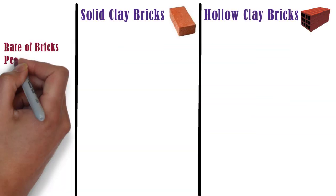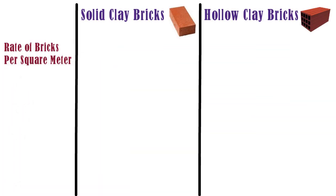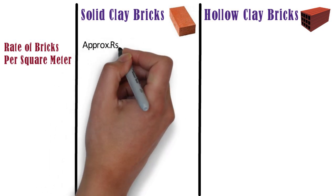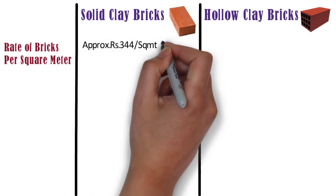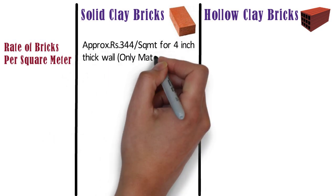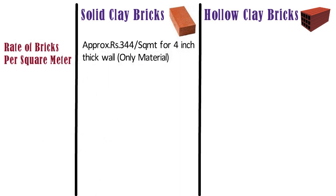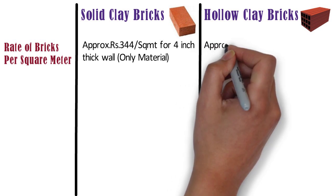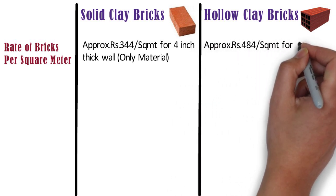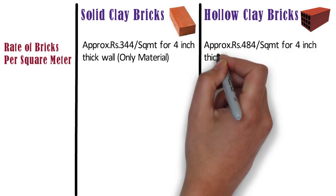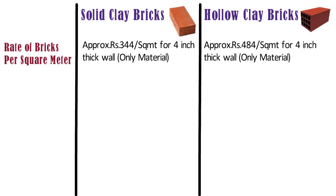Rate of bricks per m². In case of solid clay bricks, the rate shall be approximately Rs. 344 per m² for a 4-inch thick wall. Clay bricks are economical as their raw materials are easily available. Whereas, in case of hollow clay bricks, the rate is approximately Rs. 484 per m² for a 4-inch thick wall.